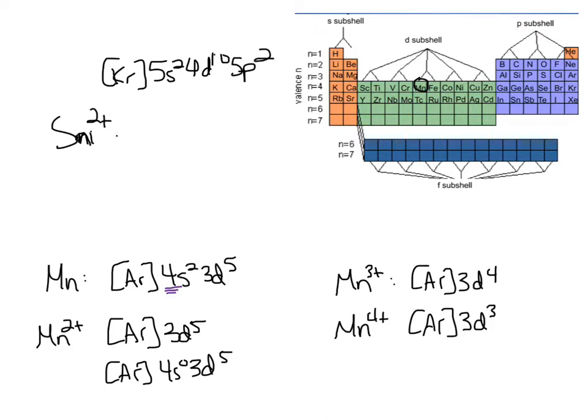Now, if it was an Sn with a 2-plus charge, where would I be taking electrons out of? Well, my fifth energy level is the highest, and I should take it out of P before taking it out of S, because the 5p are actually further from the nucleus than the 5s, so they'll be easier to remove. So, Sn2+ would be Kr, 5s2, 4d10.